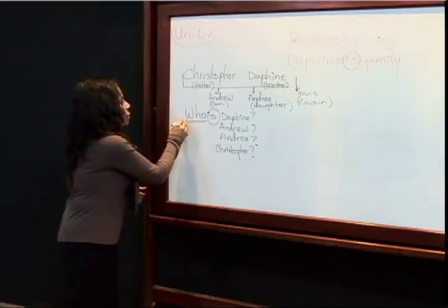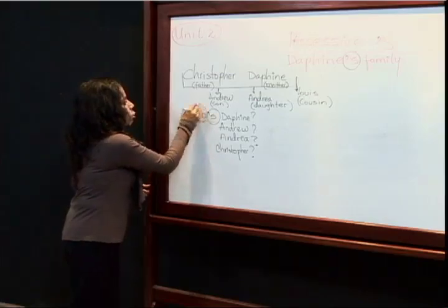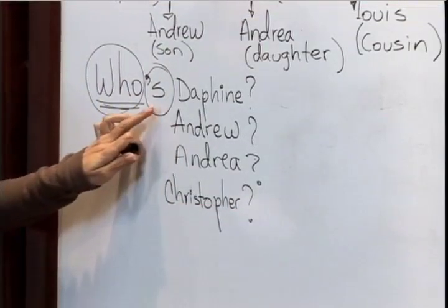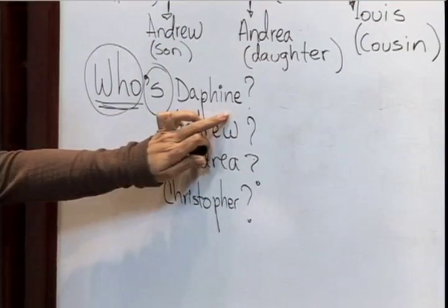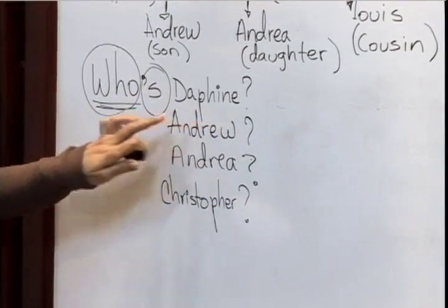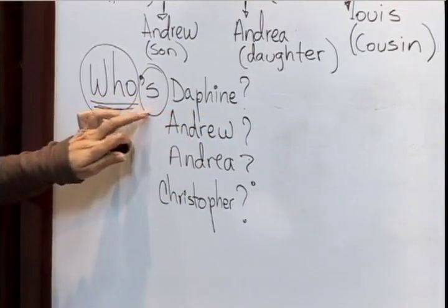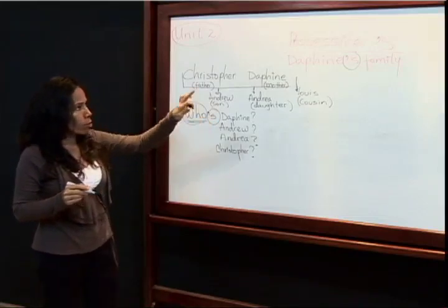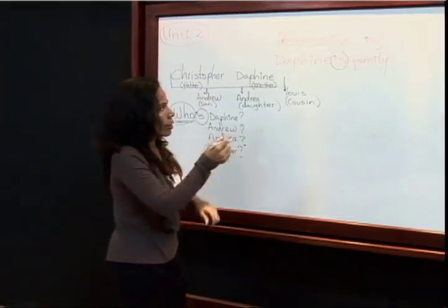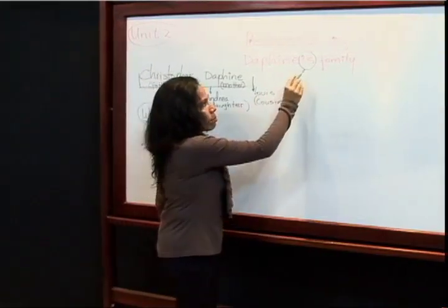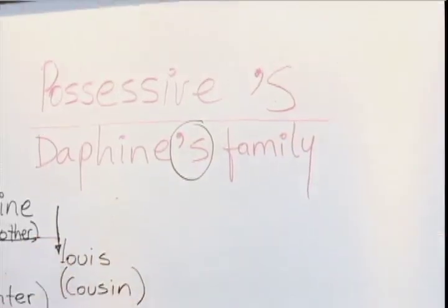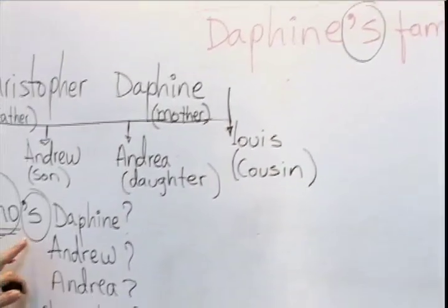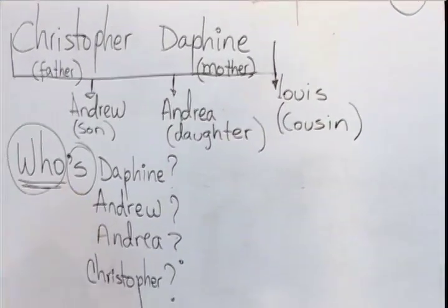Este es el WH: 'who' — ¿quién? ¿Quién es Daphne? Esa contracción que vemos aquí no tiene nada que ver con el posesivo sajón que tenemos acá.